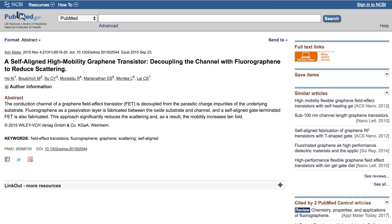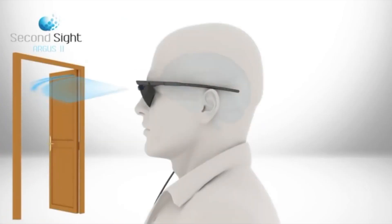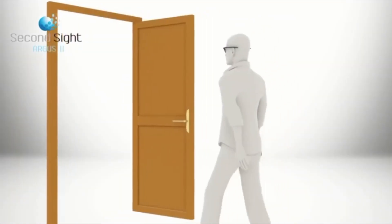For example, if you have a damaged eye, the biocompatibility of graphene transistors could let us create a mesh that interacts with your optic nerve, helping to send image data to your occipital lobe and visual cortex.